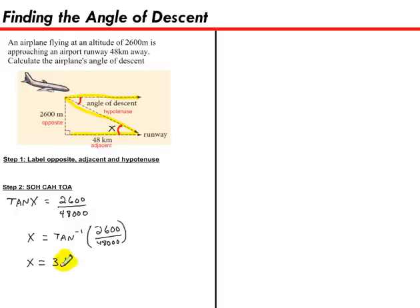And there you go. There's the plane's angle of descent. That's how we use the trigonometry ratios to calculate angle of descent. Let's add a concluding statement. Therefore, the plane's angle of descent is 3.1 degrees.